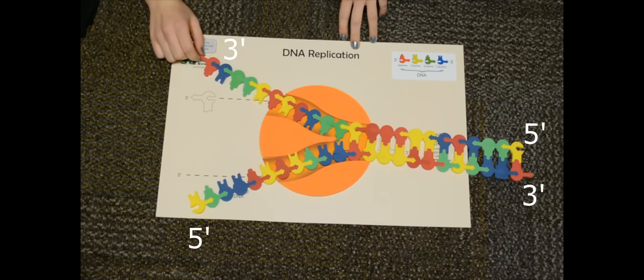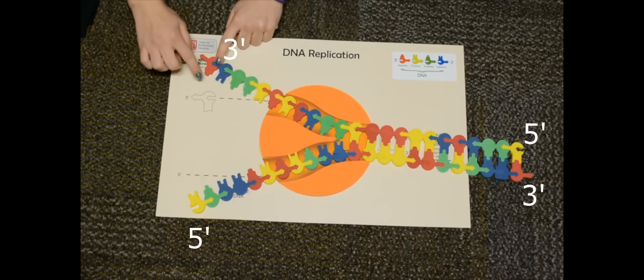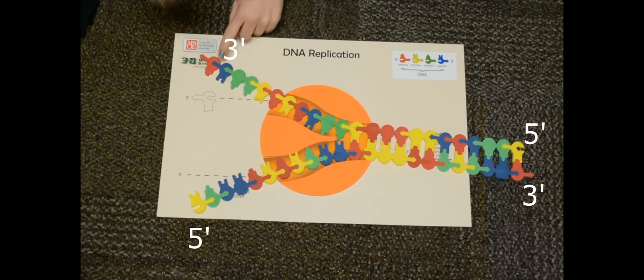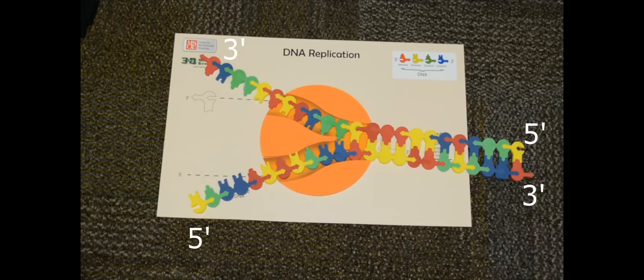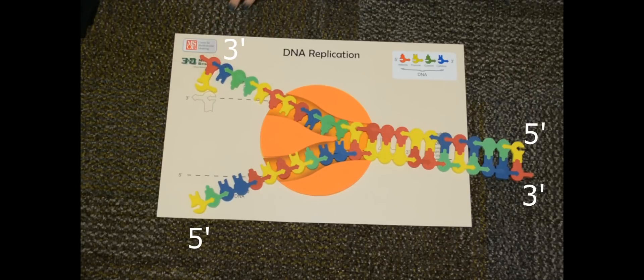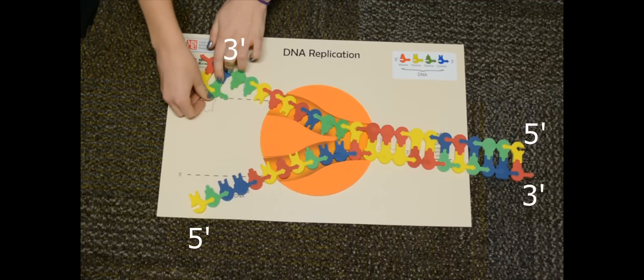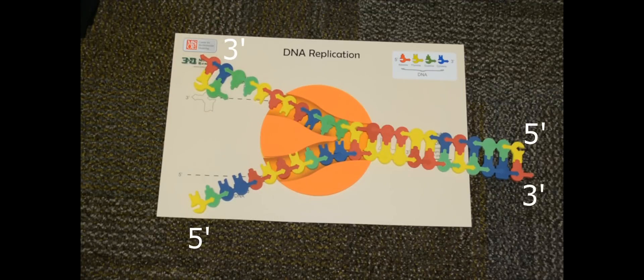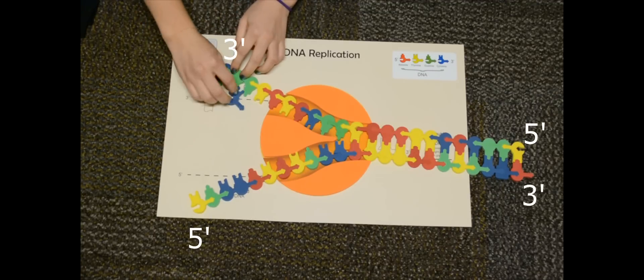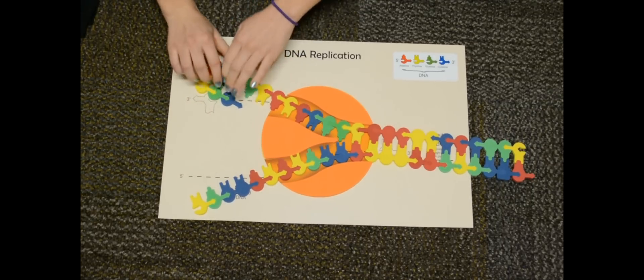Here, this is called the leading strand. The leading strand is easy because right here is going 5' to 3', so the complement's going to go 5' to 3' like this. DNA polymerase comes on and attaches the pieces. It finds the matching nucleotide bases and adds them on into a complementary strand, just like this. That is DNA polymerase.